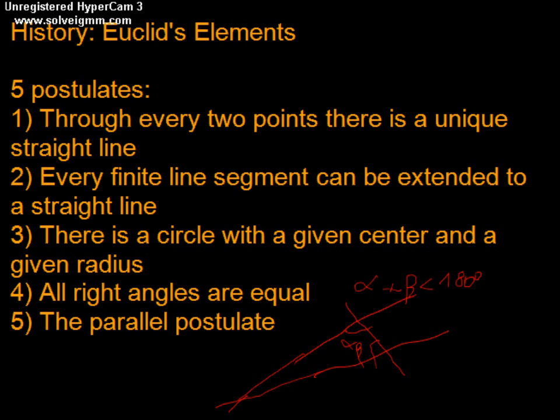It was Playfair who gave a much more easier version of the parallel postulate, which is the version that we know today, that says given any line, given any point not on the line, there exists a unique line parallel to the previous line, where parallel means that the two lines do not intersect.